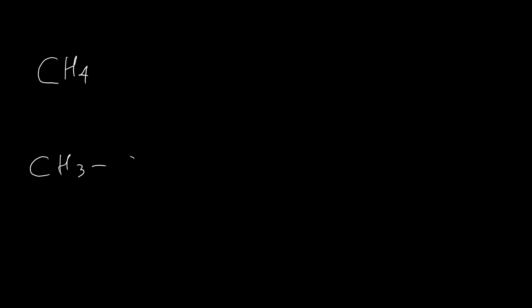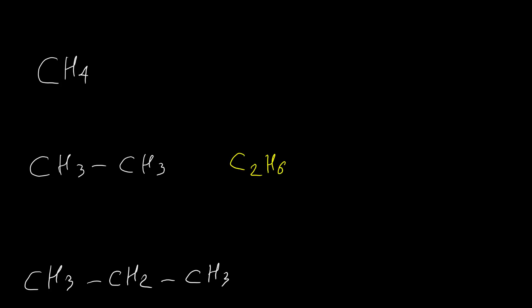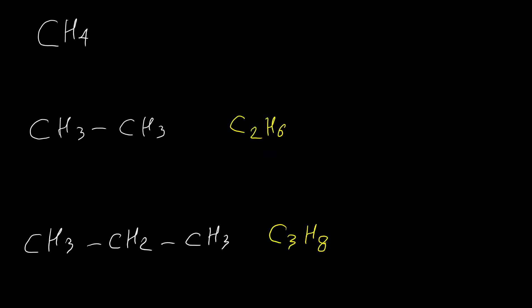The first three alkanes — methane, ethane, and propane — don't have any isomers. They each have only one possible structure for their formula. But after propane, for each alkane we have more than one possible structure.